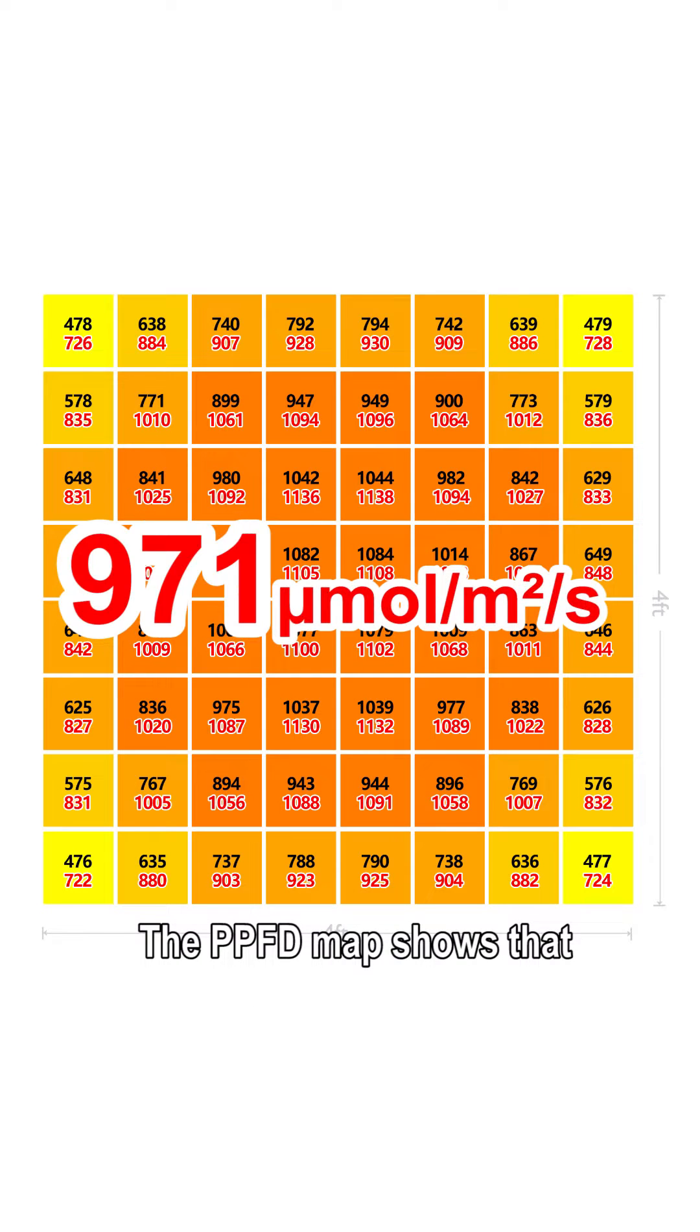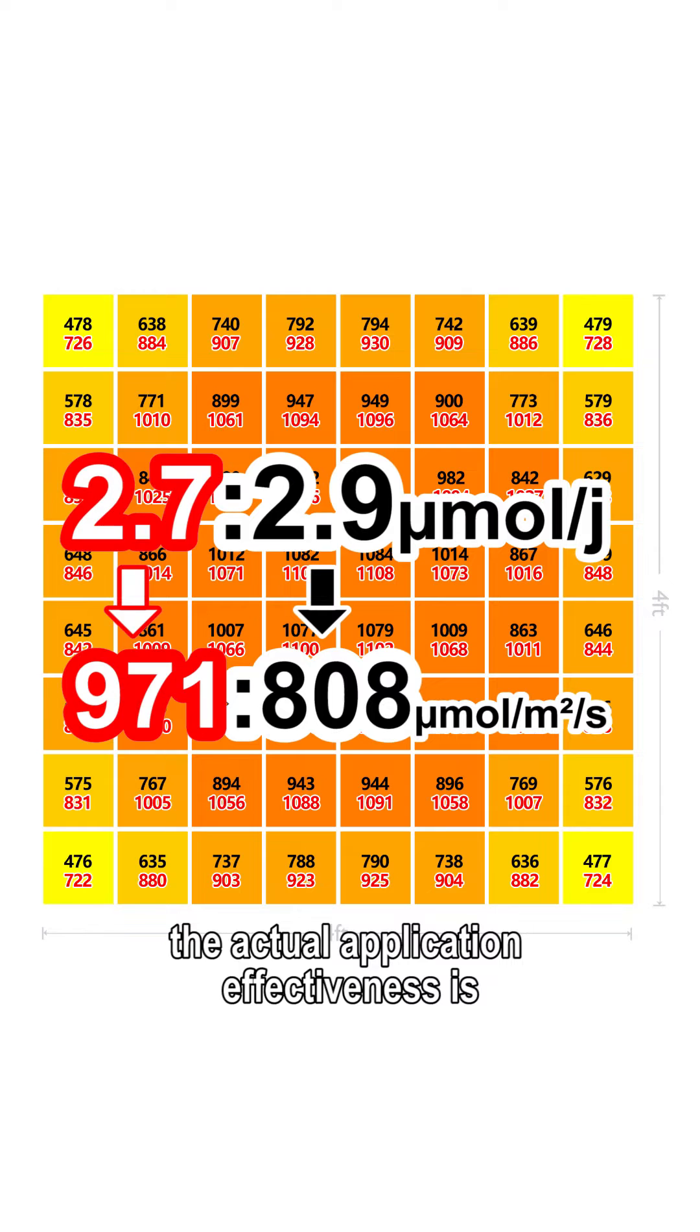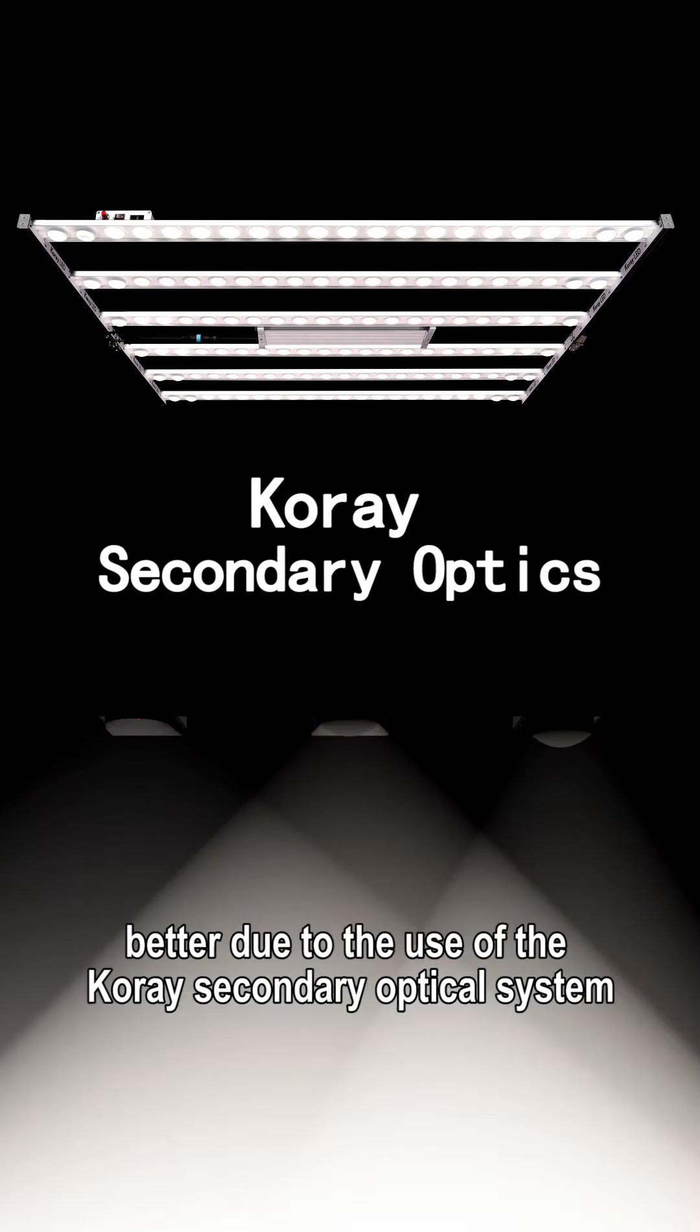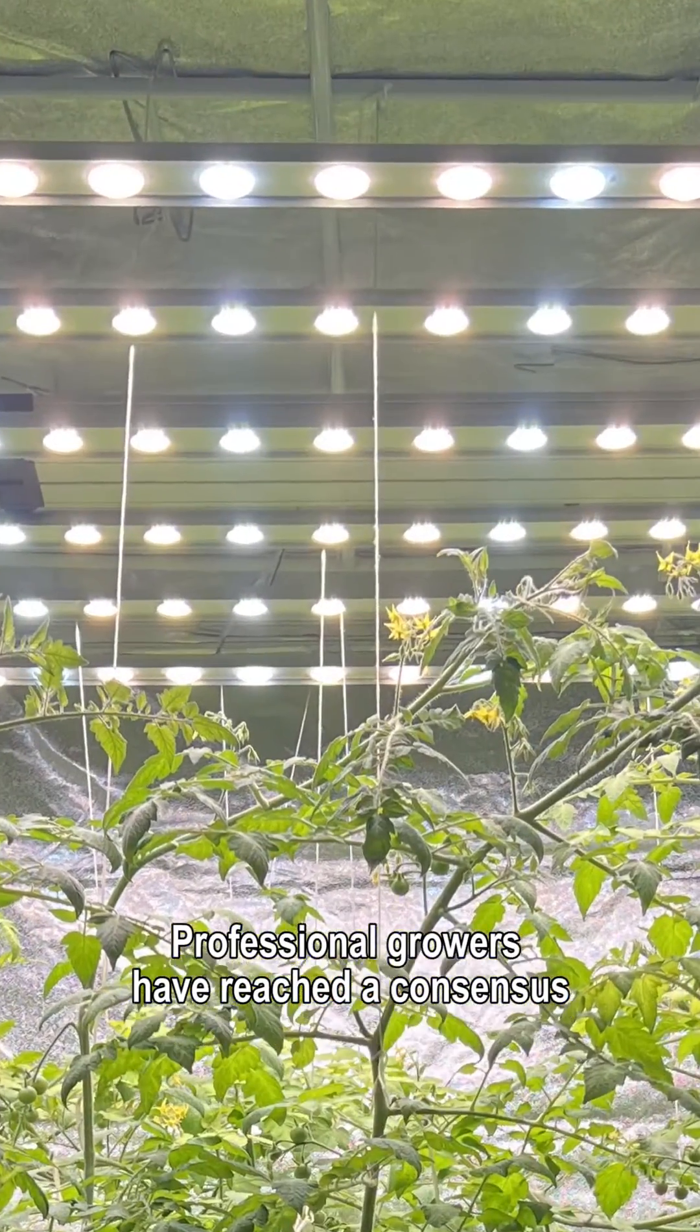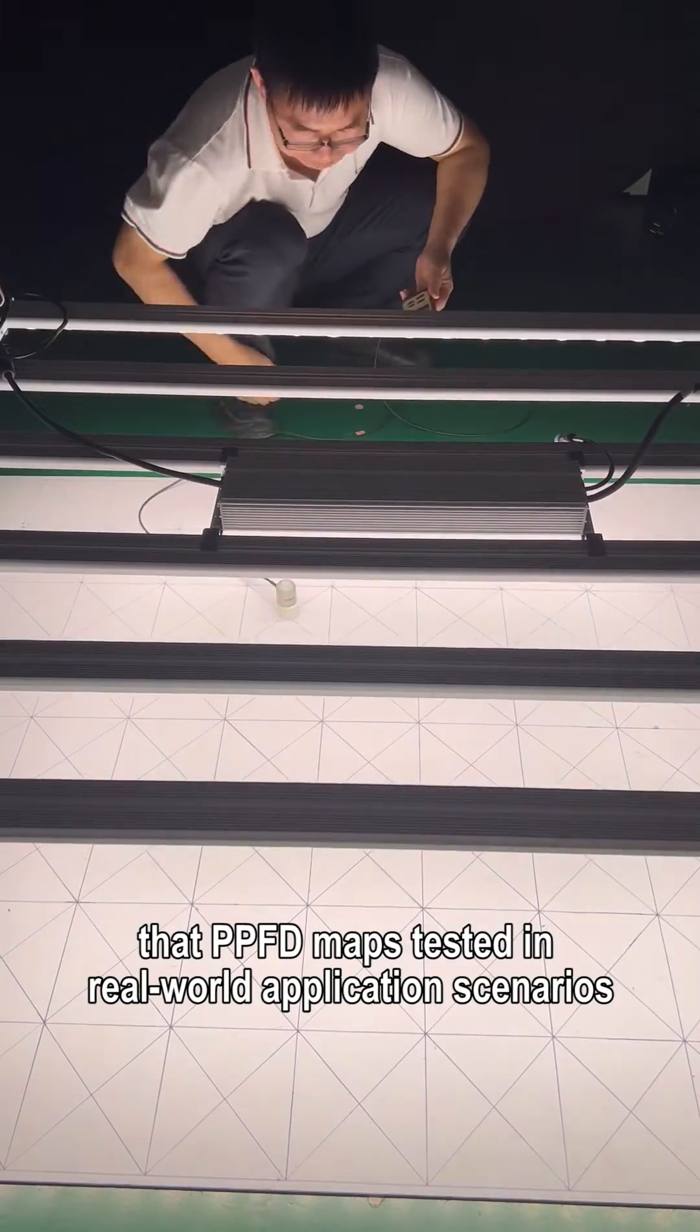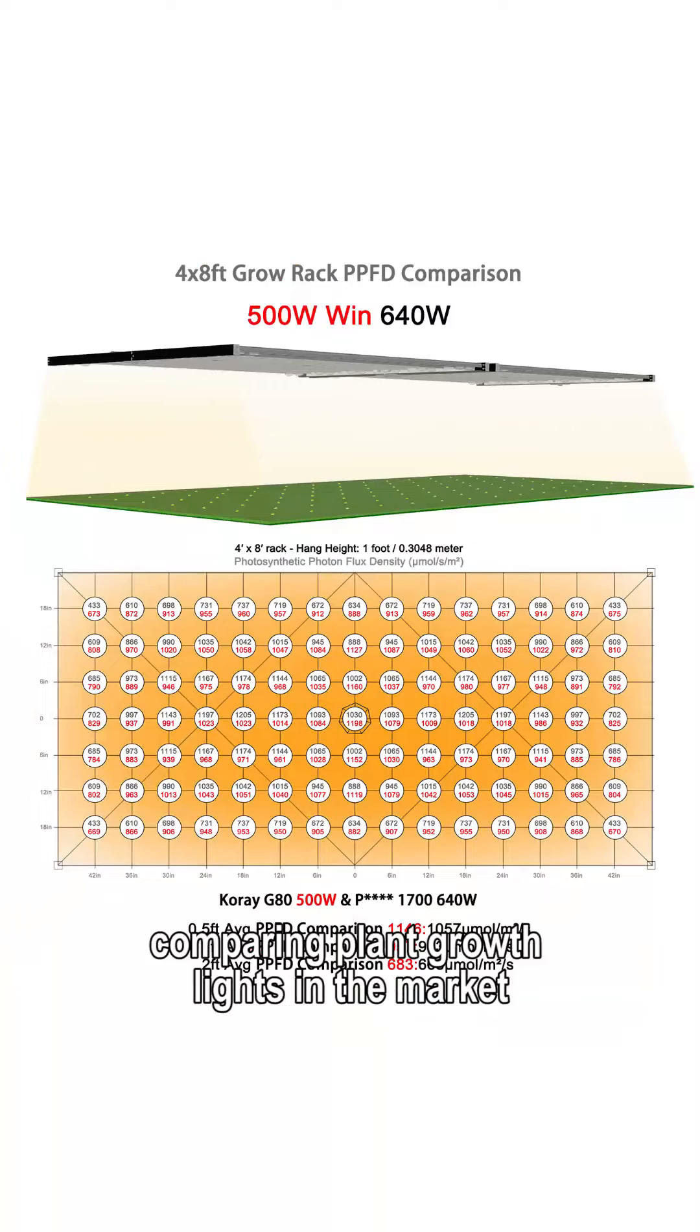The PPFD map shows that despite lower photosynthetic photon efficiency, the actual application effectiveness is better due to the use of the core A secondary optical system. Professional growers have reached a consensus that PPFD maps tested in real-world application scenarios are the core and practical indicators for comparing plant grow lights in the market.